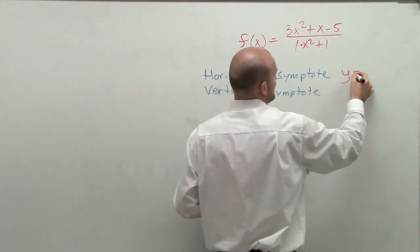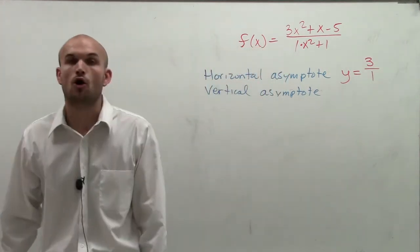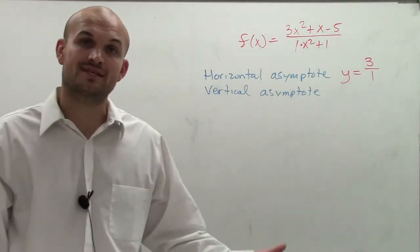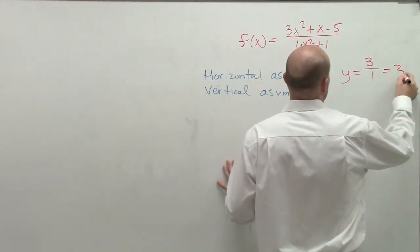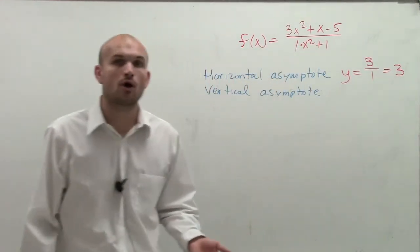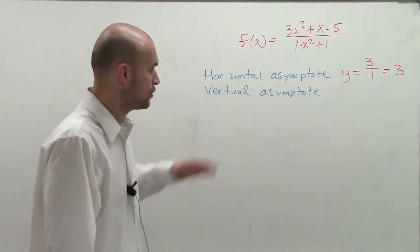We take the leading coefficient, and we say the division of the leading coefficient of the numerator over the leading coefficient of the polynomial for the denominator is going to be our horizontal asymptote. So therefore, the line y equals 3 is going to be our horizontal asymptote, the line that our function is going to approach horizontally.